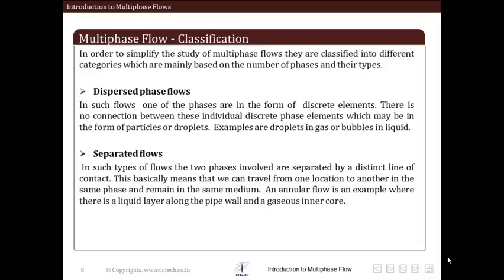Next is separated flows. In such type of flow, the two phases involved are separated by a distinct line of contact, which means that we can travel from one location to another in the same phase and remain in the same medium. An annular flow is an example of such type of flow. Annular flow generally involves a liquid layer along the pipe and a gaseous inner core.